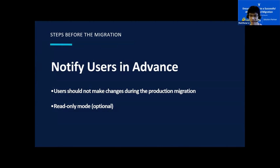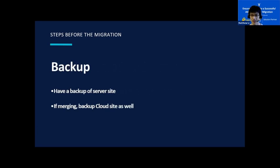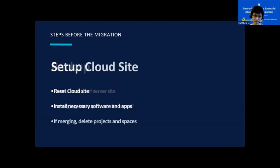For Confluence, you would go through each space and remove all permissions for anything other than read. For Jira, you'd make a new permission scheme that only has the browse permission and apply it to all projects. Nothing needs to be done for Bitbucket, since no group and project permissions are migrated. Before performing the production migration, be sure to have a backup of your server site. In case the migration goes wrong, if you're merging with an existing cloud site, make sure you have a backup of the cloud site as well. If you're migrating to a new cloud instance, be sure that there is no data in your cloud site before your production migration. The migration assistant will not let you migrate a project or space if there is an existing one in the cloud site with the same name or key.